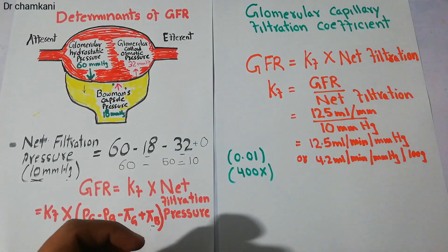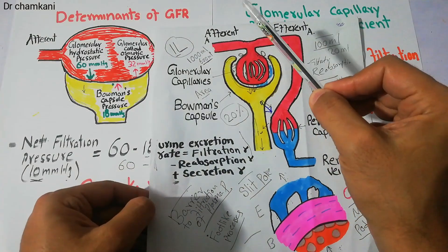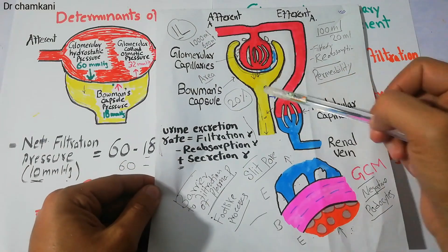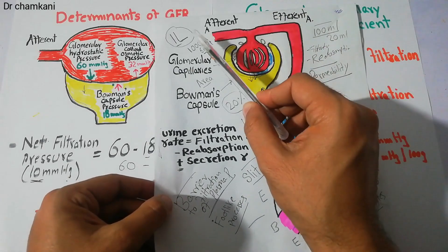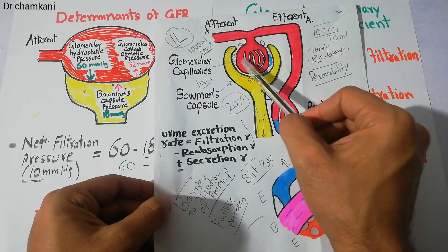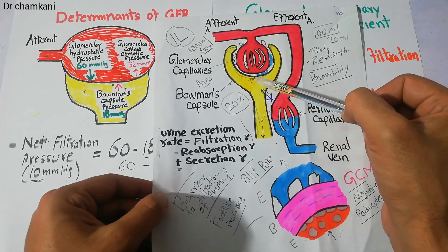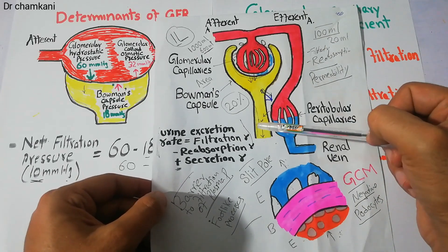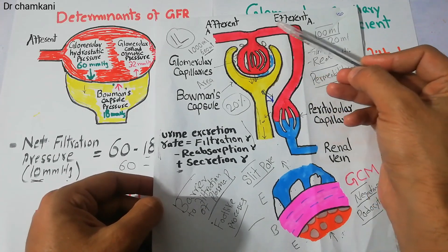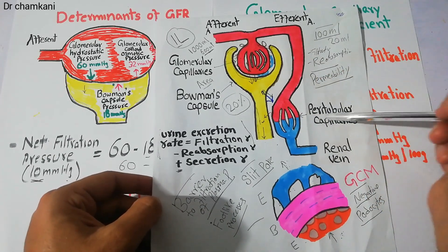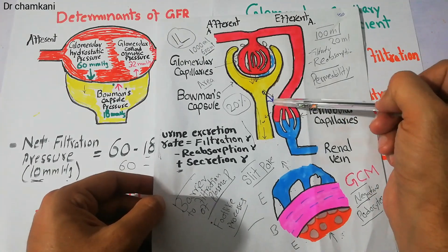We are discussing the urine formation process. Inside the kidney, urine formation begins at the level of the nephron, and the first step is filtration. Filtration begins when the afferent arteriole brings blood into the nephron and filters fluid into the Bowman's capsule. The filtrate moves through the nephron tubules to form urine. The remaining blood from the glomerulus goes back into the efferent arteriole, then divides into the peritubular capillaries, which may reabsorb fluid or secrete substances.